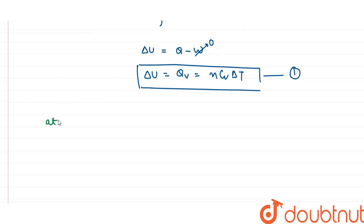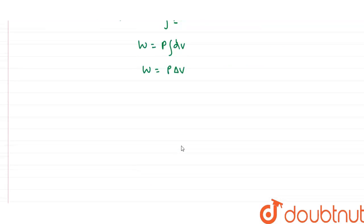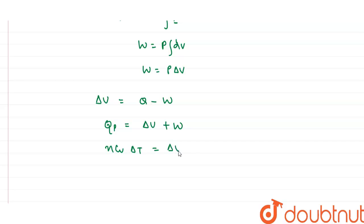At constant pressure, work done is given by the integration of p dV. Since pressure is constant, W = p·ΔV. From the first law, ΔU = Q − W, so the heat at constant pressure is Qp = ΔU + W = nCpΔT = ΔU + p·ΔV. This is equation two.